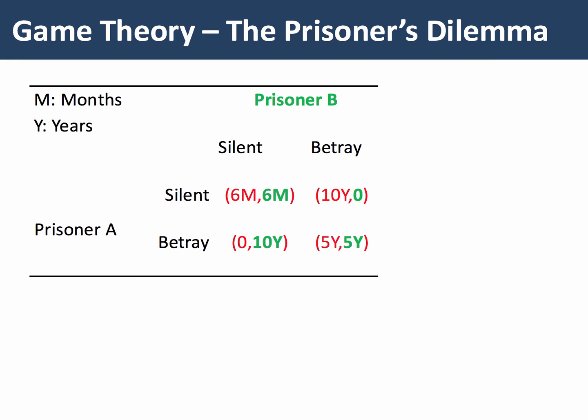If Prisoner A stays silent, they get ten years and Prisoner B is released. If Prisoner A betrays but Prisoner B stays silent, Prisoner A is released but Prisoner B gets ten years.